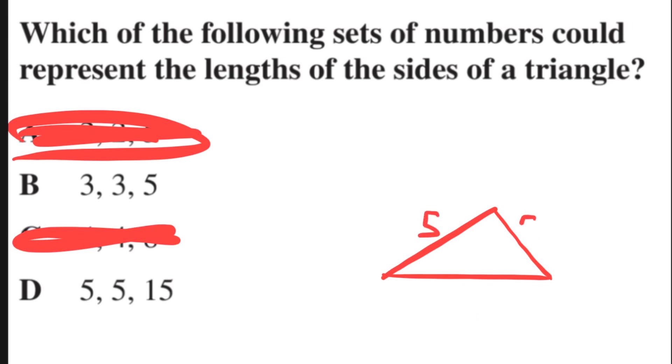D has 5, 5, and 15. That's not possible because if you go up and down those two sides of 5 and 5, that is shorter than 15. So you cannot have a triangle where two sides are 5 and 5, and the third side is longer than both those sides. So therefore, D is out. The correct answer is B.